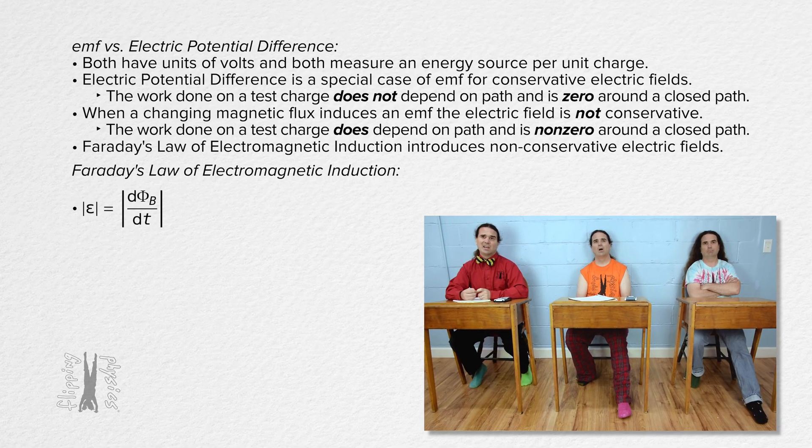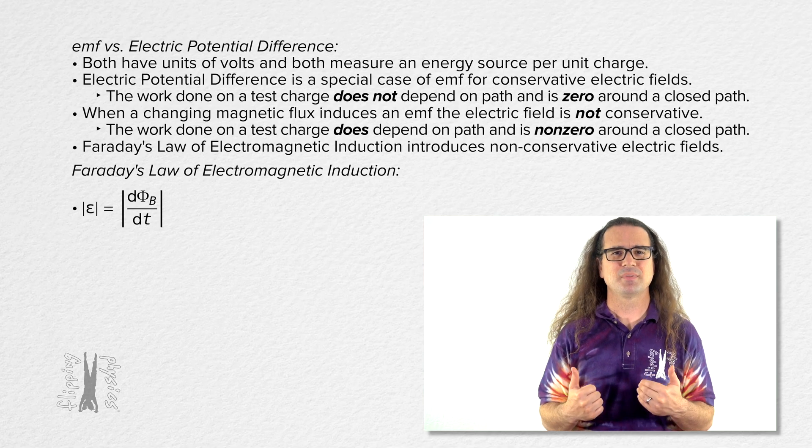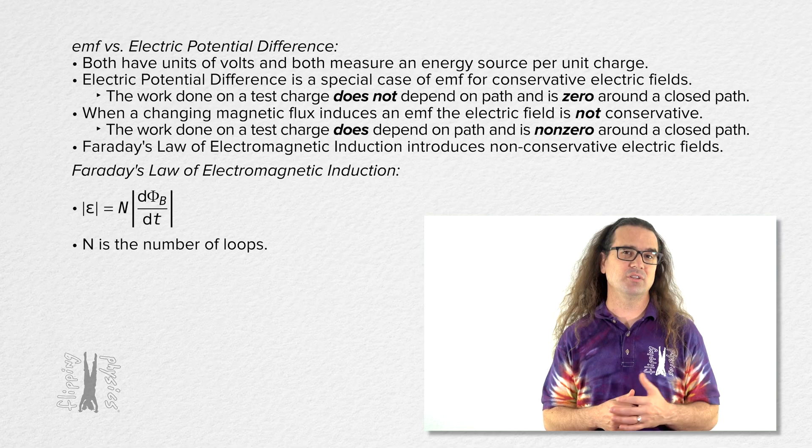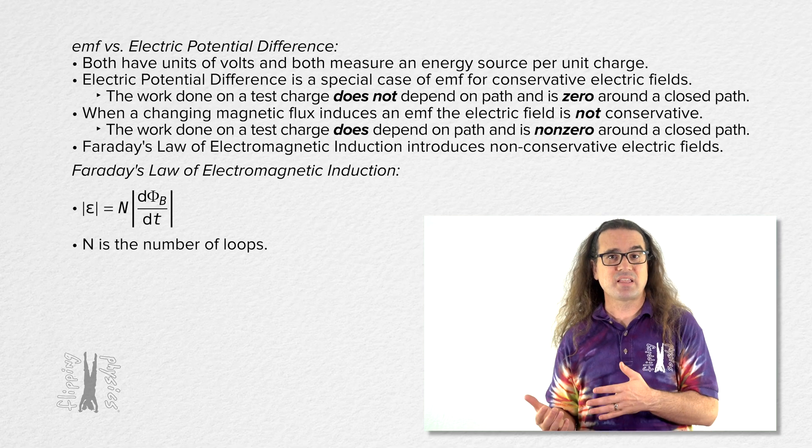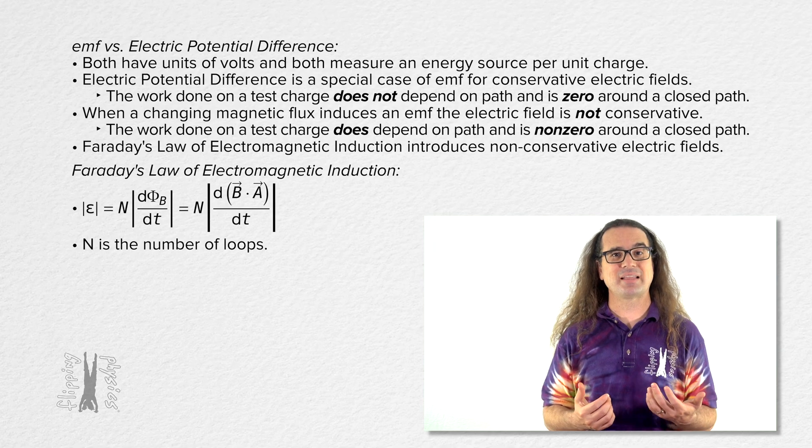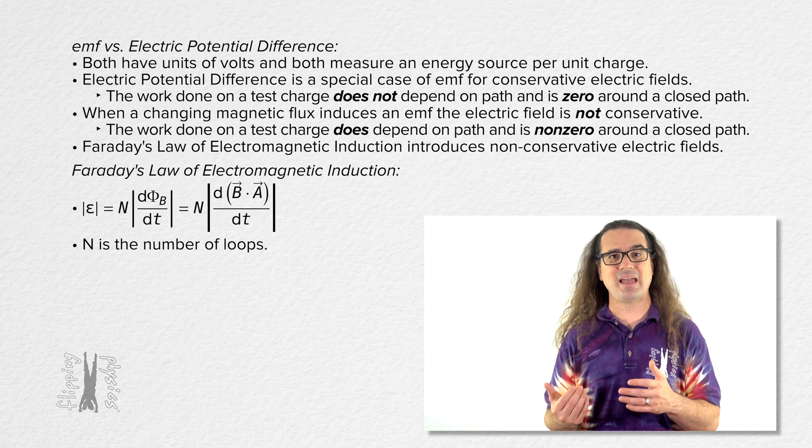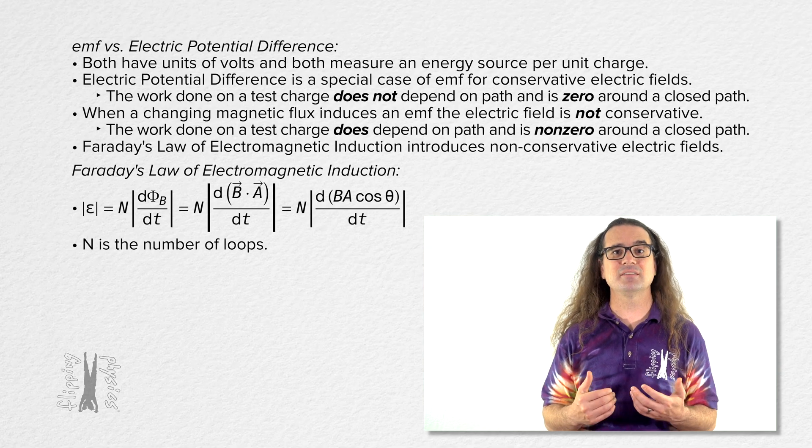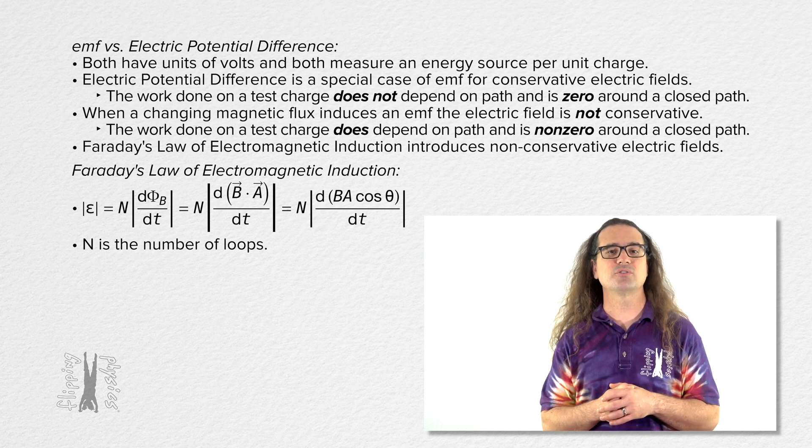Back to Faraday's law of induction, which I am going to expand on a bit. I'm going to add a capital N, which stands for the number of loops through which the magnetic flux is changing. We know magnetic flux equals the dot product of the magnetic field B and the area vector A of the loop. The dot product equals B times A times cosine of the angle between those two vectors.